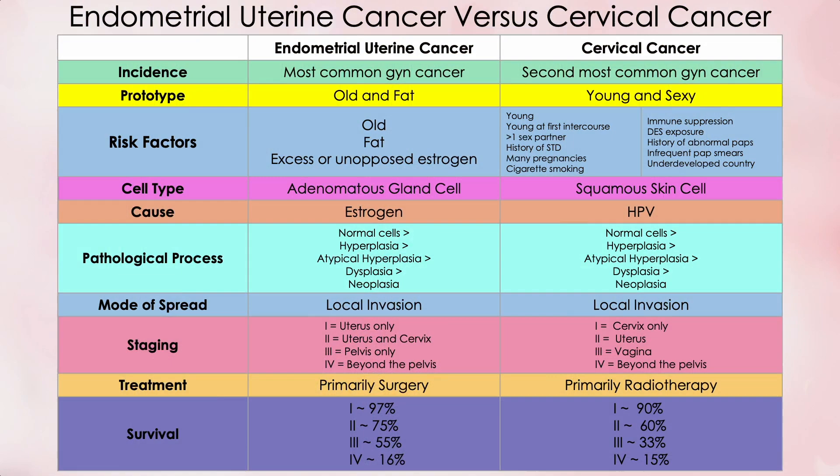The next two factors on our list are similarities, so let's skip them for now and move on to staging. All staging systems reflect progressive spread of cancer. The biggest difference in the two staging systems lies in stage 3: for endometrial uterine cancer, stage 3 encompasses your entire pelvis, but for cervical cancer, stage 3 pertains to just your vagina. This does make you realize that cervical cancer is the more aggressive of the two cancers.